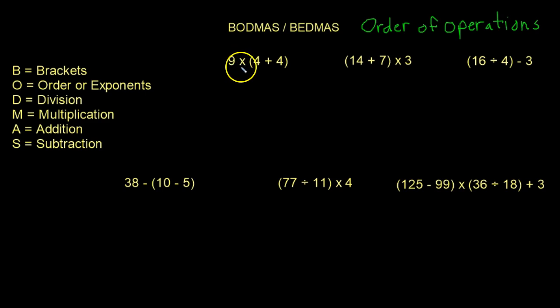We have 9 multiplied by bracket 4 plus 4 and then a bracket. Well, our order of operations, our BODMAS rule, says that we have to do whatever is in the brackets first. So we write down this part here because we're not working with it yet. Brackets, and then we just add 4 plus 4, which is 8.